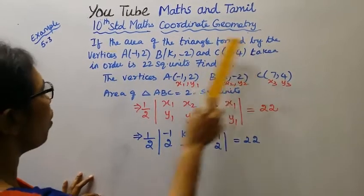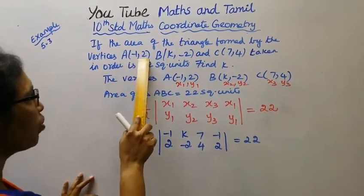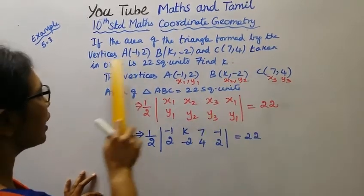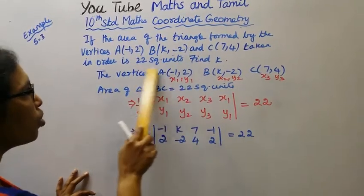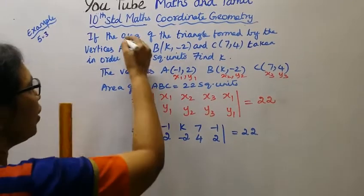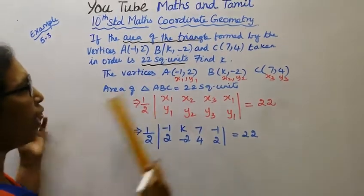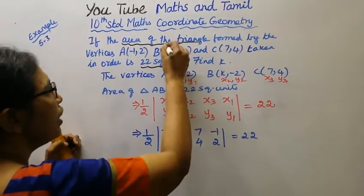If the area of the triangle formed by the vertices A(-1,2), B(k,-2), and C(7,4) taken in order is 22 square units, find k. We have to find the value of k.